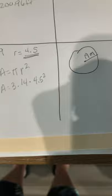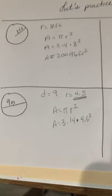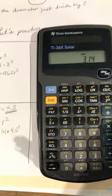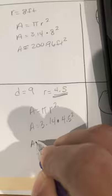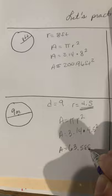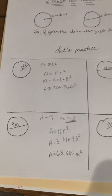Now, yes, you can use your calculator. So it's 3.14 times 4.5 squared equals, and then that is going to be 63.585, and it's meters squared. How'd you do? Good job.